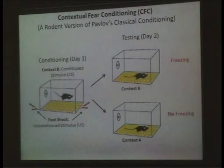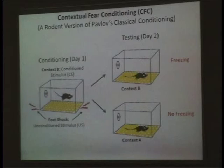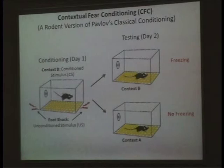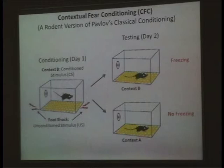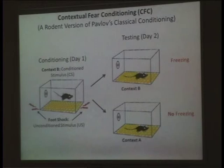You can demonstrate that the animal formed a fear memory by, on day two, putting the same mouse back into the same chamber, context B. If the animal remembers that context B is dangerous, it will freeze and not move around. This is because in nature, when a rodent senses a predator, staying still avoids detection. If you put the animal in a different chamber, context A, it will not freeze — demonstrating a context-specific fear memory.